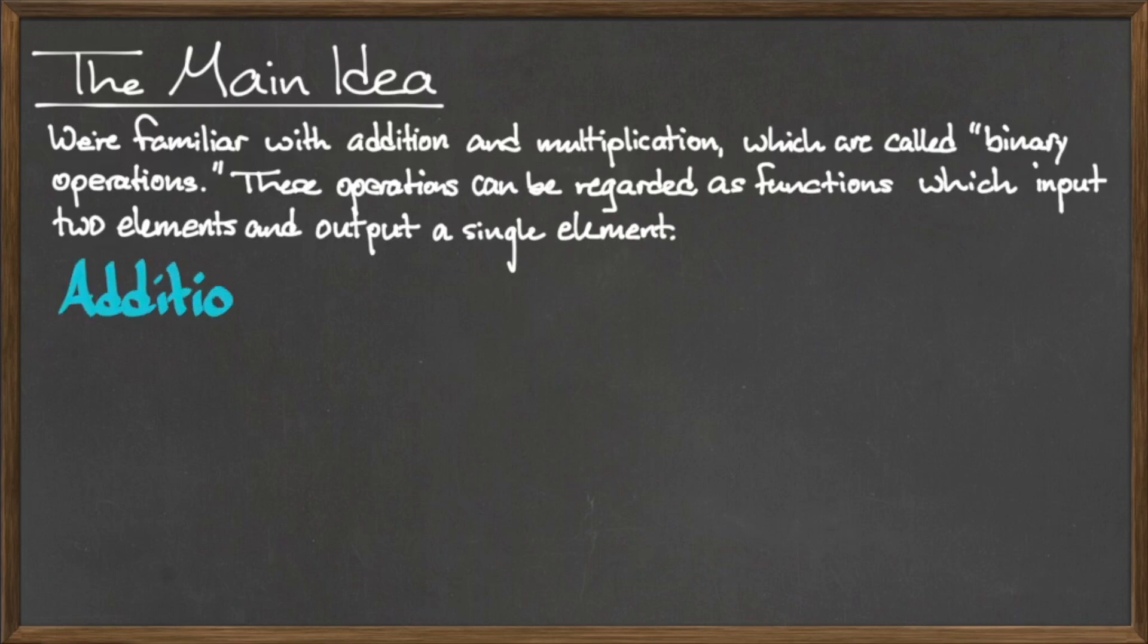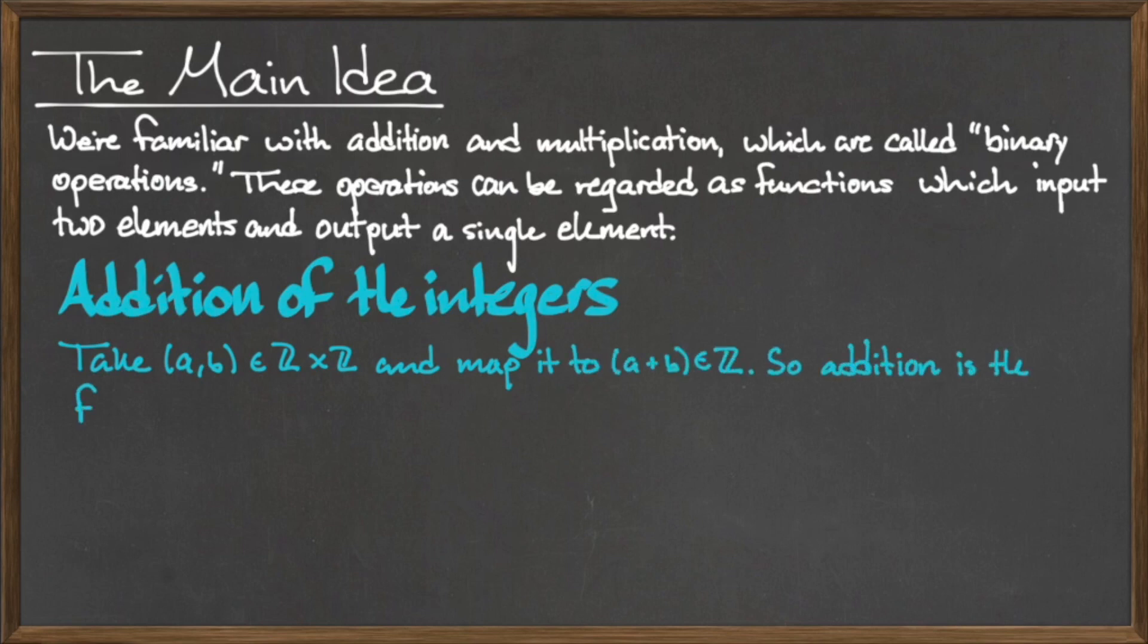We've already seen examples of binary operations, for example, the addition of integers. To add the two integers a and b, we take the ordered pair (a, b), which is an element of the set Z × Z, and we map it to the single element a + b in Z.